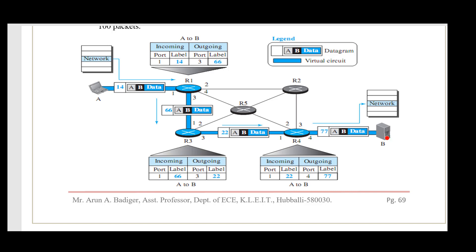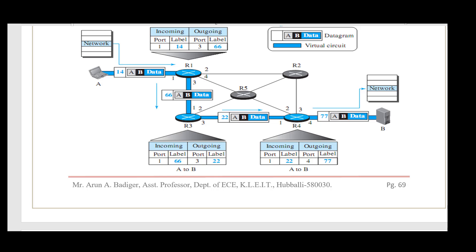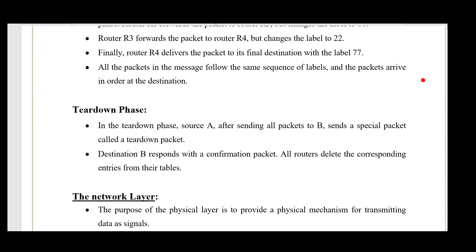The necessity of packet labels is that in real time, many packets from different systems arrive at the same router link simultaneously. Labels help identify which packet belongs to which virtual path. Without labels, it would be very difficult to distinguish packets and forward them correctly. Once data is delivered, the next phase is the teardown phase.